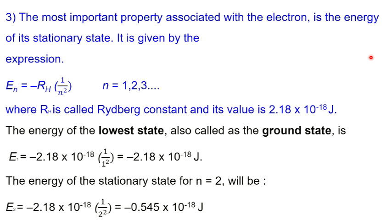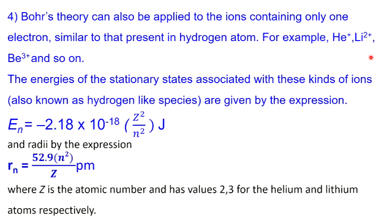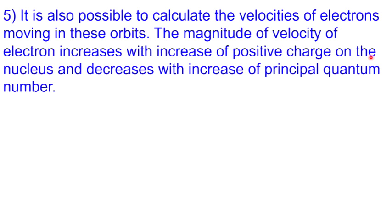Bohr's theory can also be applied to ions containing only one electron, similar to that present in the hydrogen atom — for example, He⁺. It is also possible to calculate the velocity of electrons moving in these orbits. The magnitude of velocity of the electron increases with the increase of positive charge in the nucleus and decreases with the increase of principal quantum number.